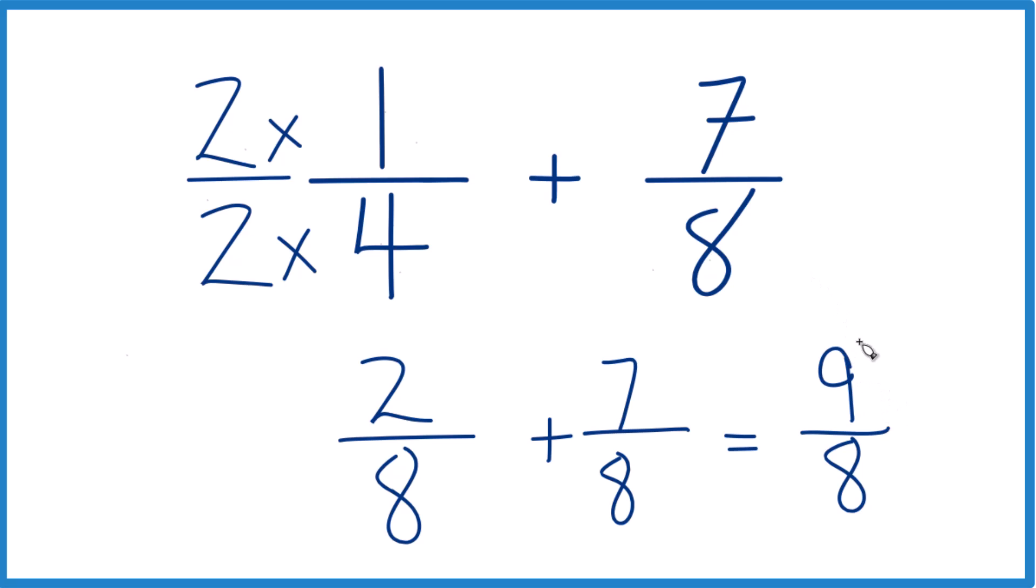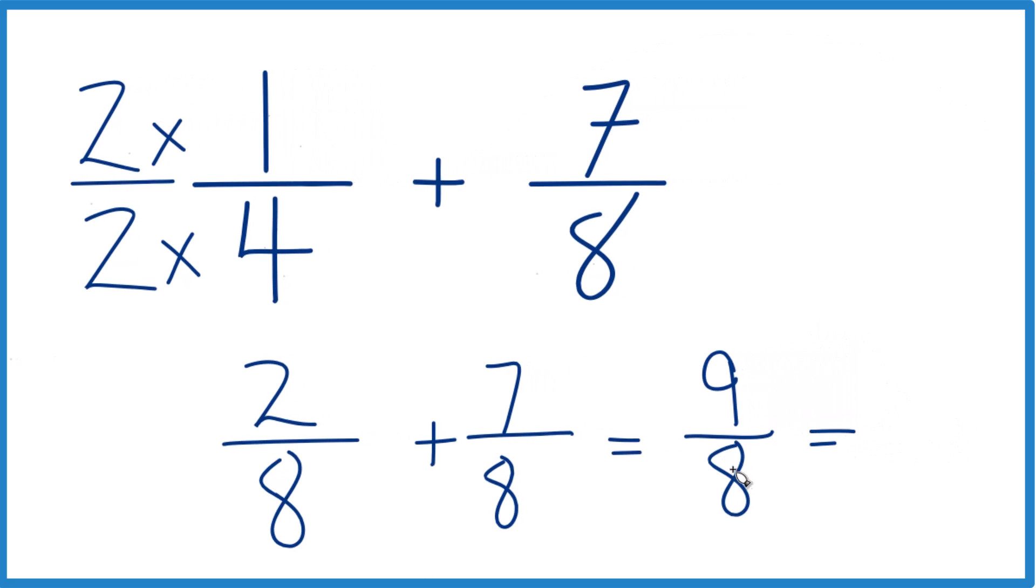This is an improper fraction though, because the numerator is greater than the denominator. We could change it to a mixed number. 8 goes into 9, well 1 times 8 is 8, and we'd have 1 left over, bring the 8 across.